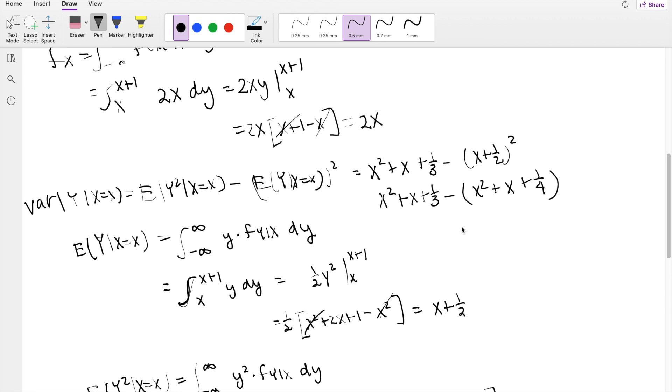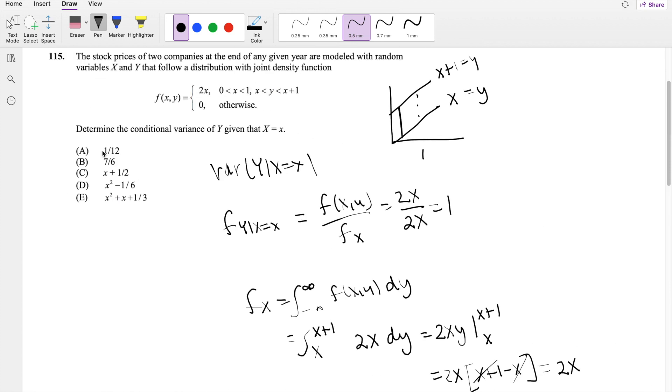X² actually cancels out, and this becomes X minus X, which is 0, and you're left with 1/3 minus 1/4, which equals 1/12, which is our answer A.